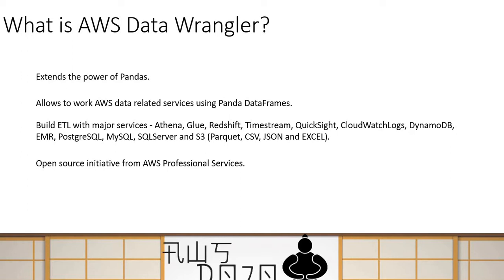You can load data from these services into a pandas DataFrame, then use pandas DataFrame methods to do different types of transformations and operations on the data, and then again you can use Data Wrangler to write data back to services like Glue, S3, or DynamoDB from a pandas DataFrame. So basically what Data Wrangler does is load data from AWS services into pandas DataFrames and write data from pandas DataFrames back to AWS services.